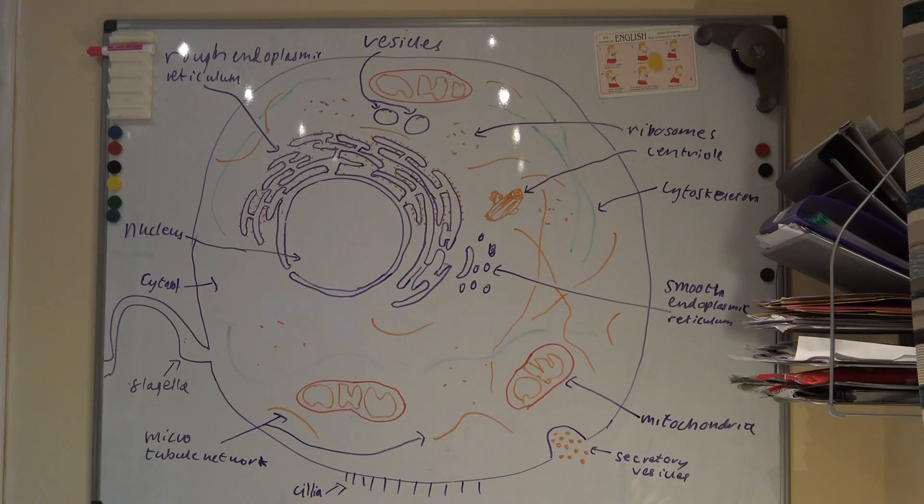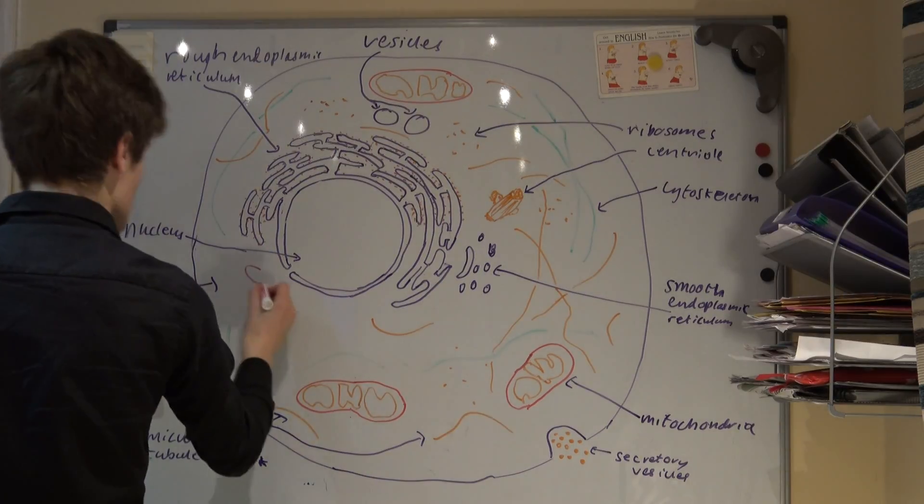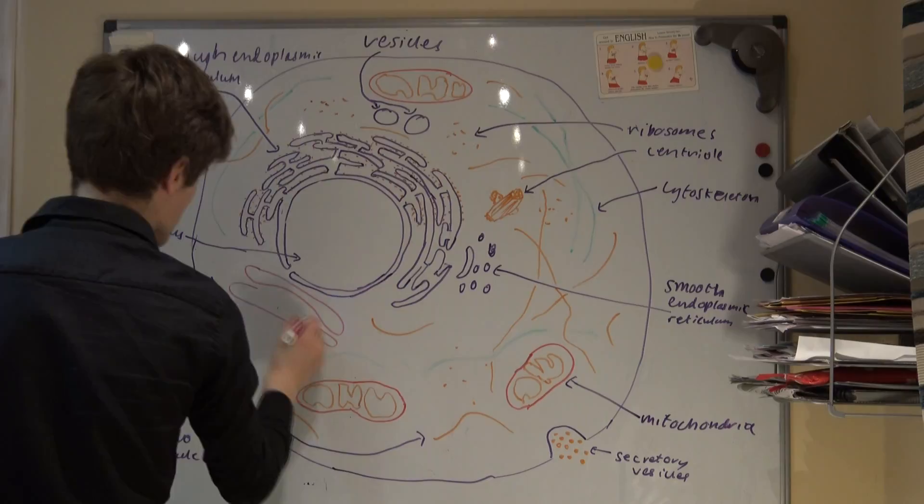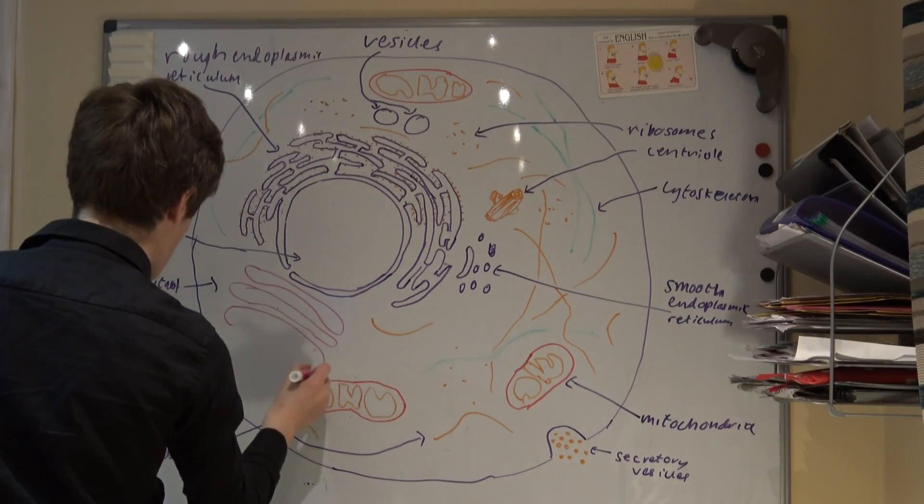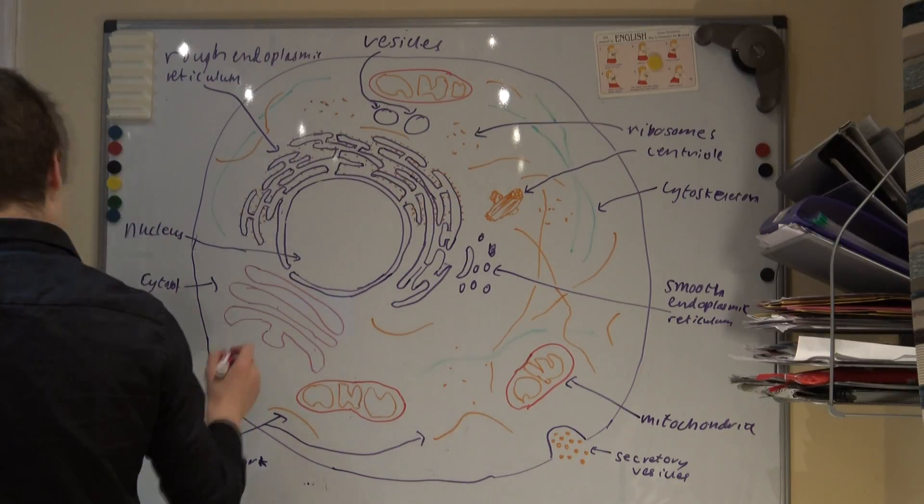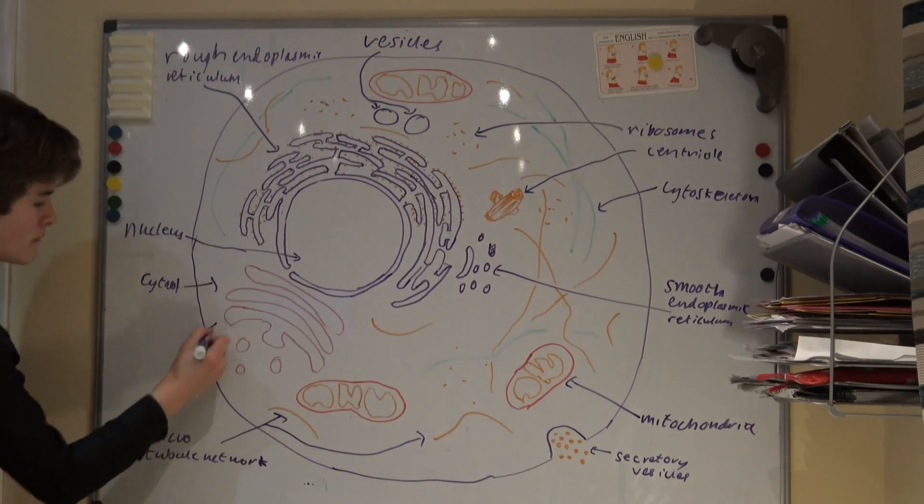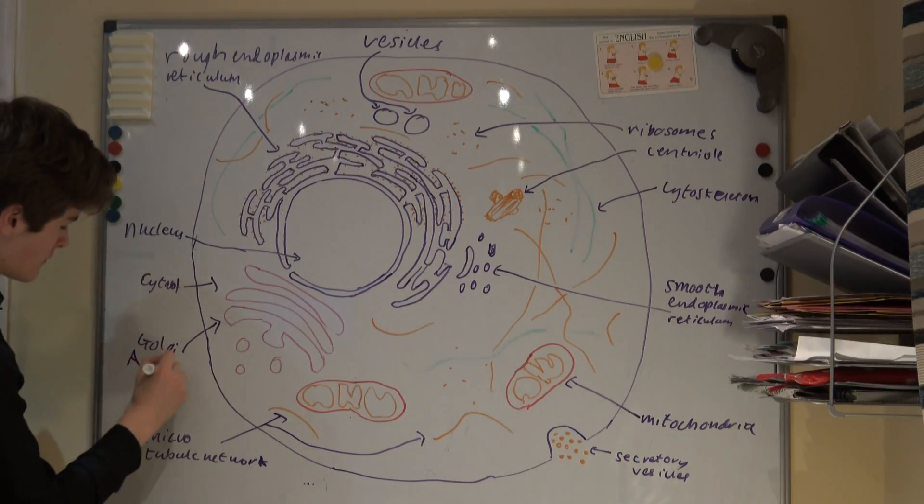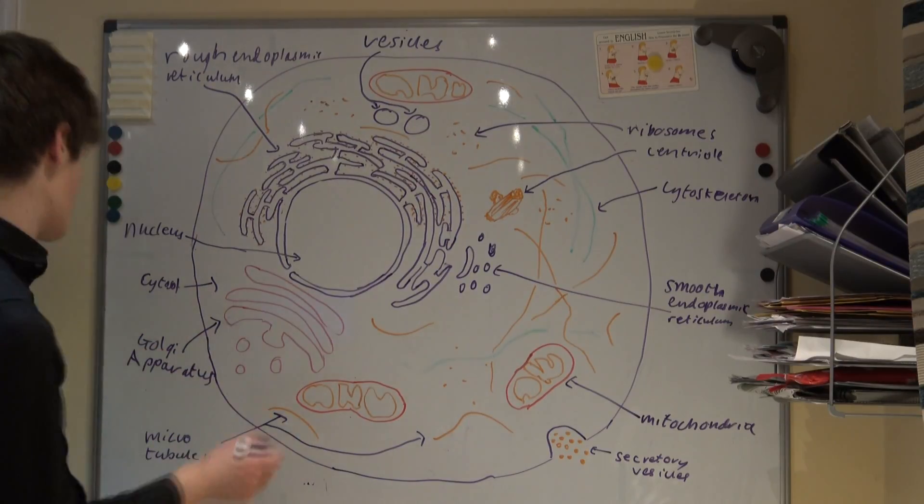A very key function of the cell is to synthesize proteins, whether for internal use or secretion. A large proportion of the cell is required for this process. The cytoskeleton, endoplasmic reticulum, and ribosomes have a role in protein synthesis. But one organelle I haven't described is the Golgi apparatus. This is very similar in structure to the smooth endoplasmic reticulum. It is a compact structure formed of cisternae. It does not contain any ribosomes, as its role is to modify proteins and package them into vesicles.